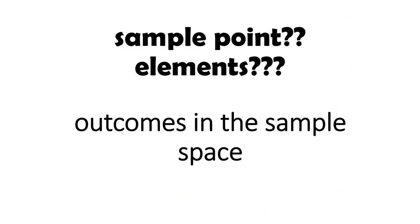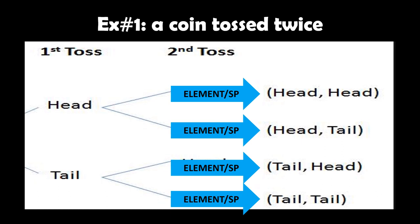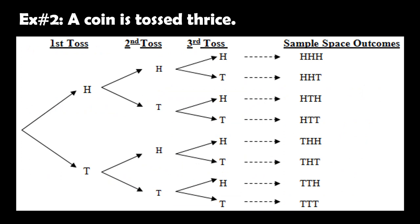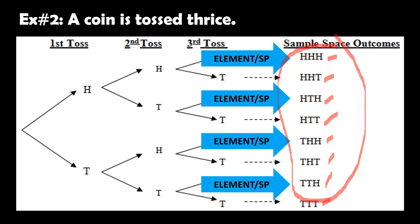Now let's go to sample points or elements — these are the outcomes in the sample space. Example number 1: a coin is tossed twice. The elements are head-head, head-tail, tail-head, or tail-tail. Each one of those is called an element. Example number 2: a coin is tossed thrice. The elements are HHH, HHT, HTH, HTT and so on — there are 8 elements total, and the count of all of them is what we call the sample space.